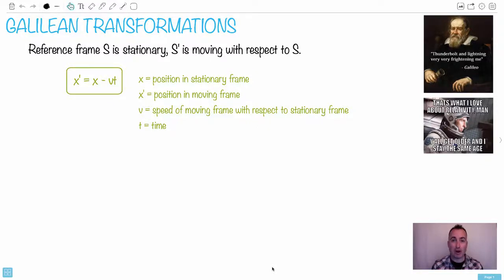Relativity. This is a great option. It's absolutely mind-blowing, and that's why I'm really excited to talk to you about this. What I'd like to start with, though, is Galilean transformations. I'll start off with this picture of Galileo, and it says, 'Thunderbolt and lightning, very, very frightening me.' Do you know that song? That's a song by the band Queen.